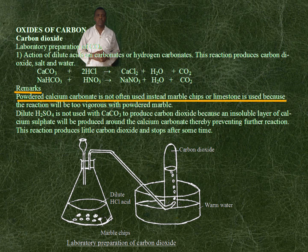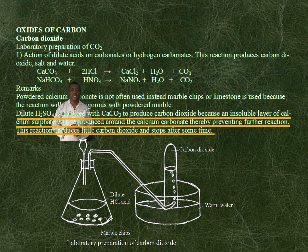Remarks: Powdered calcium carbonate is not often used because the reaction will be too vigorous with powdered marble. Dilute sulfuric acid is not used with calcium carbonate to produce carbon dioxide because an insoluble layer of calcium sulfate will be produced around the calcium carbonate, thereby preventing further reaction. This reaction produces little carbon dioxide and stops after some time.